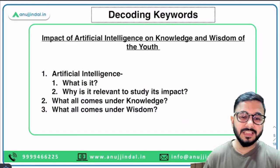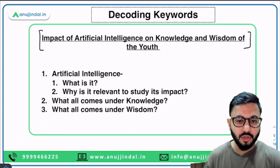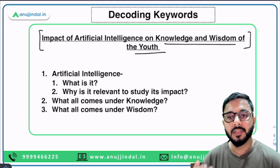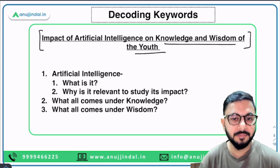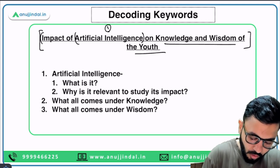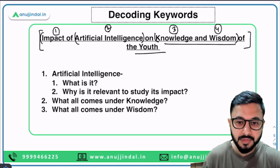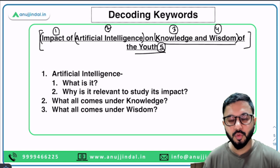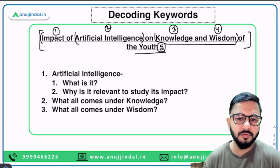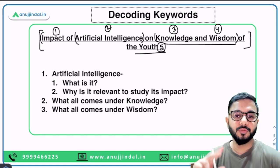This is the essay we are going to pick up for today's session. The topic is: 'Impact of artificial intelligence on knowledge and wisdom of the youth.' This is more specific — in the RBI examination some essays will be very broad and some very specific. The keywords here are 'impact of artificial intelligence,' 'knowledge and wisdom,' and 'youth.' Knowledge can be kept separate, wisdom can be kept separate, and we are focusing only on the youth.